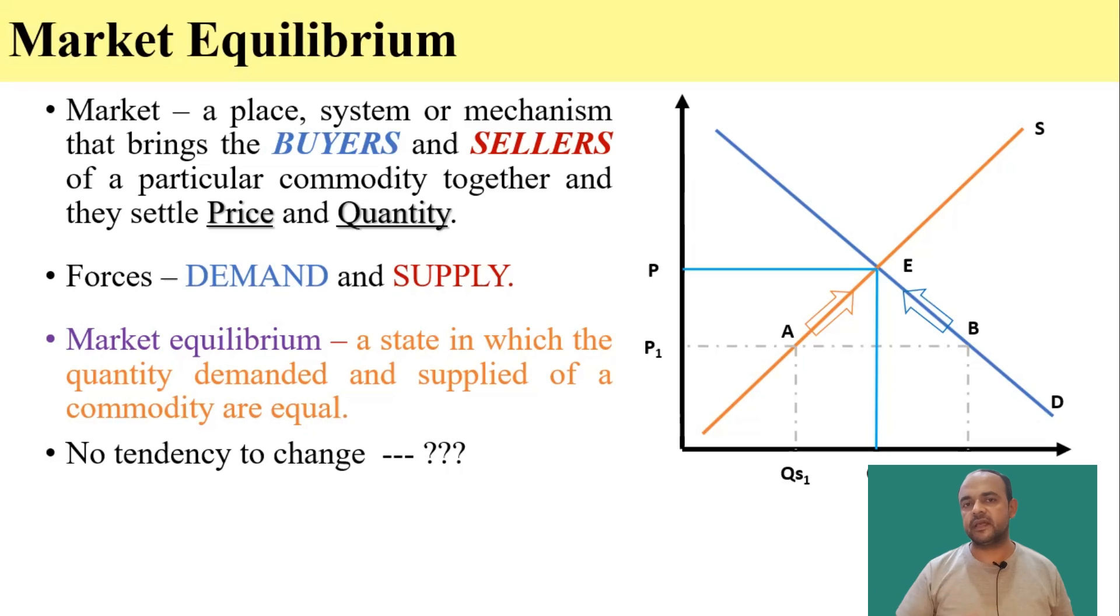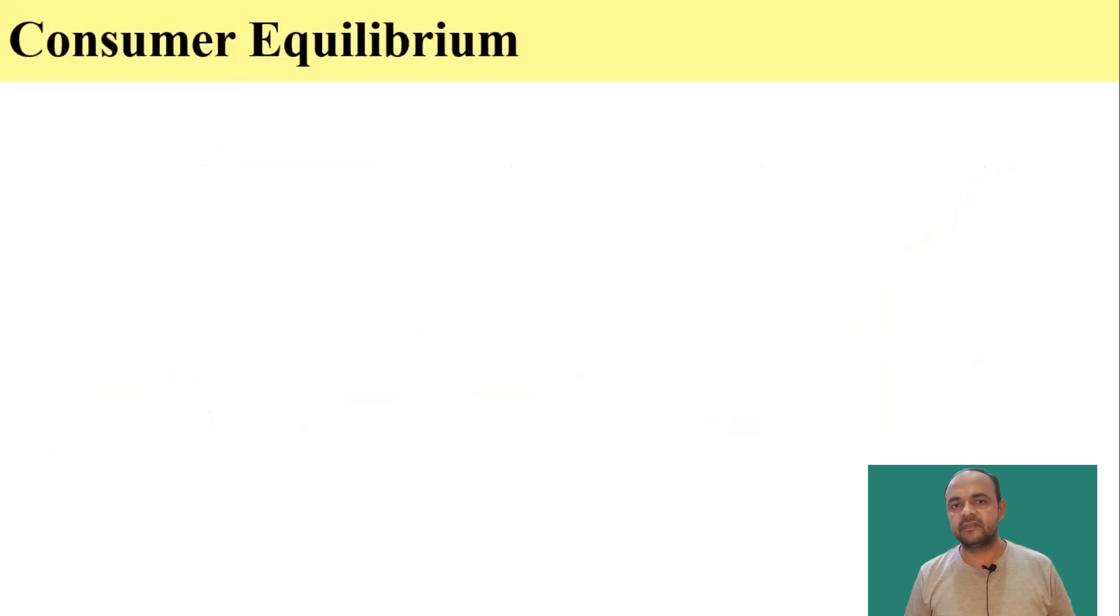If it goes beyond that, there will be surplus commodity in the market. So the price will come down eventually when the price will be at P and quantity traded will be at Q, there will be no tendency for further change to occur. And we will say that market is in equilibrium.